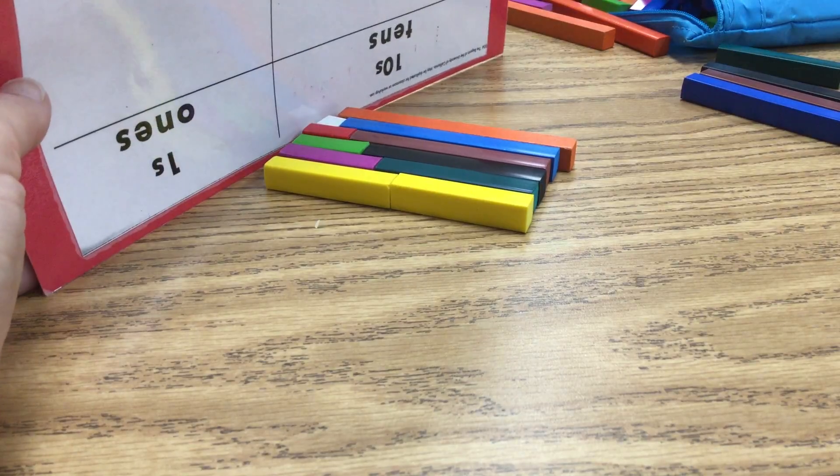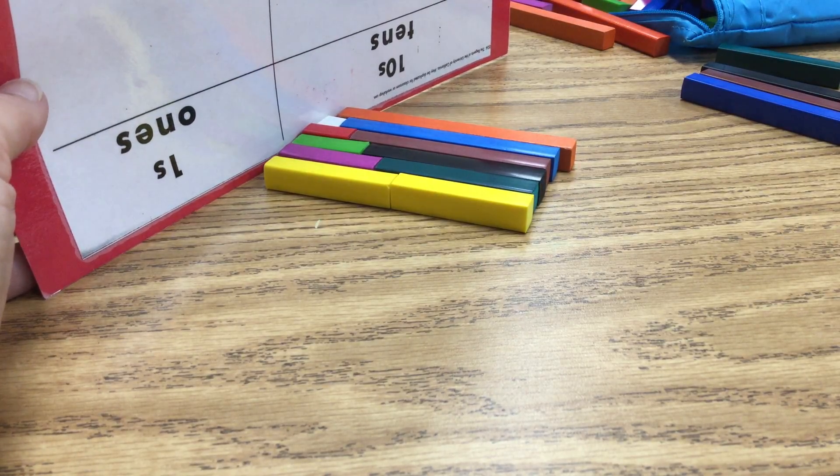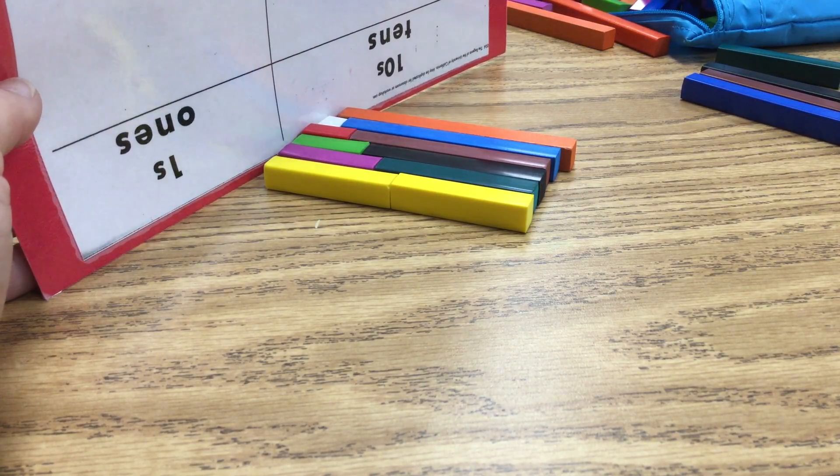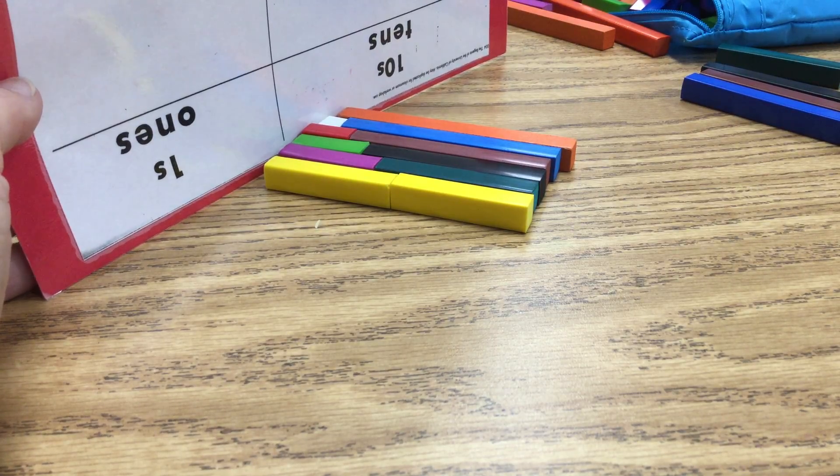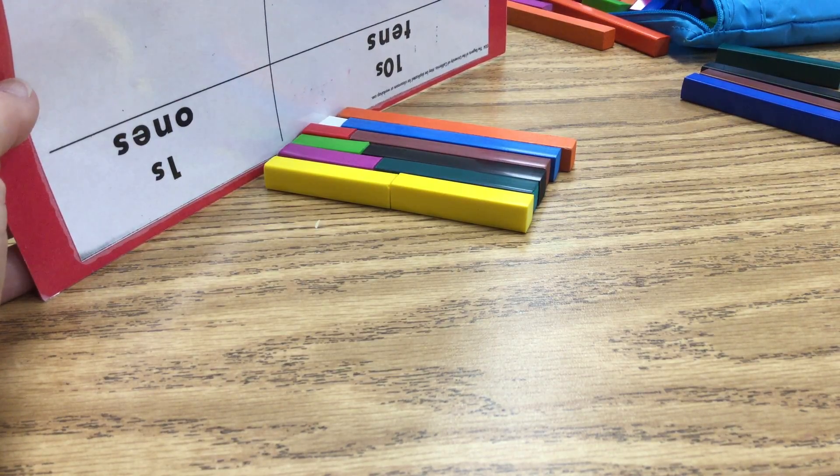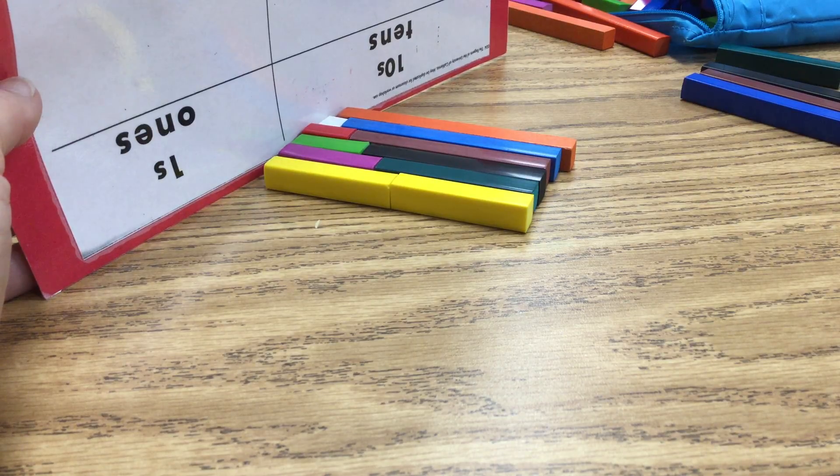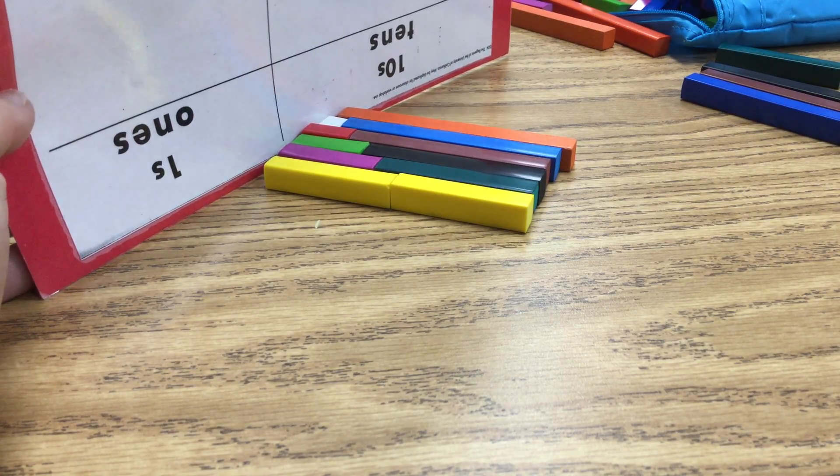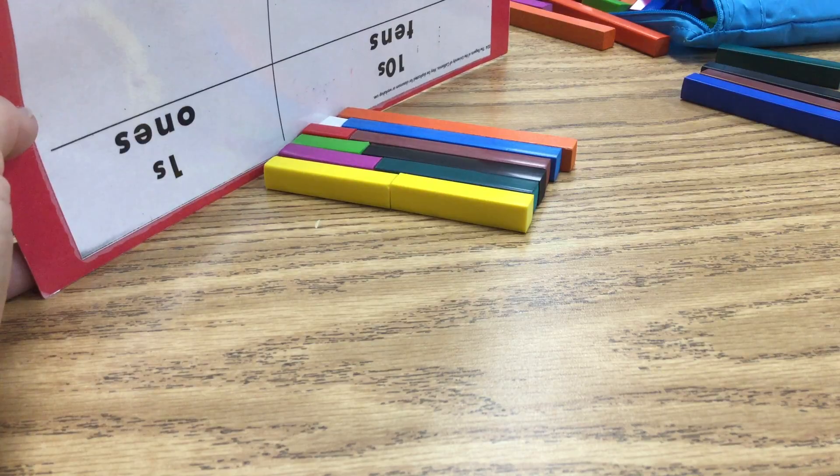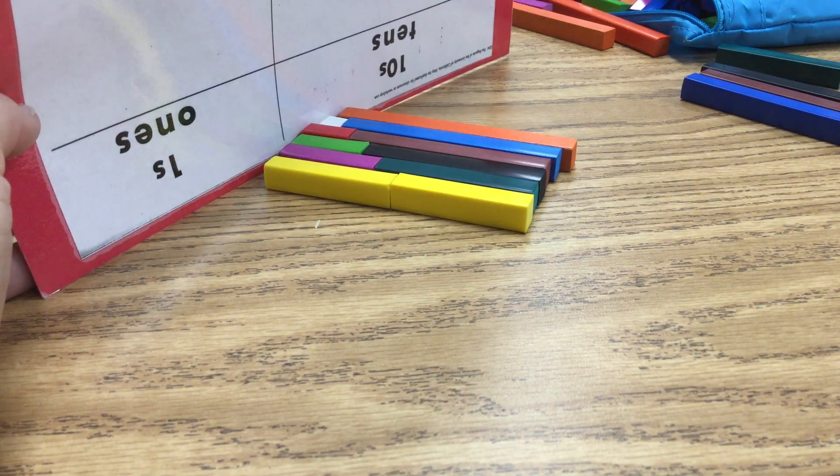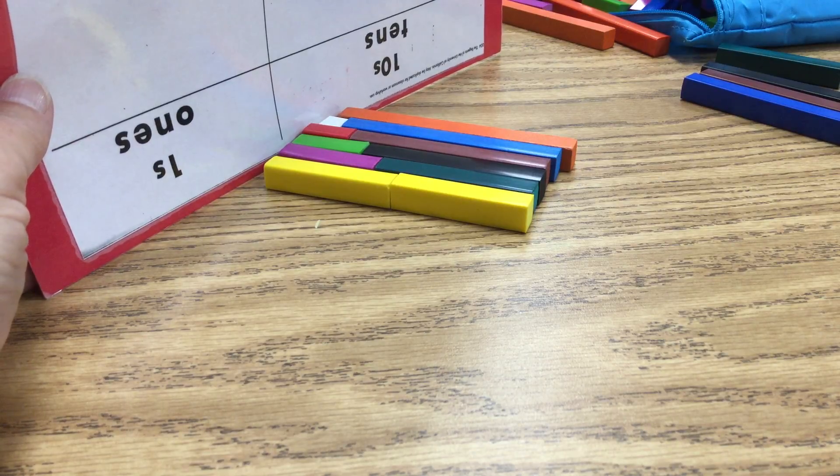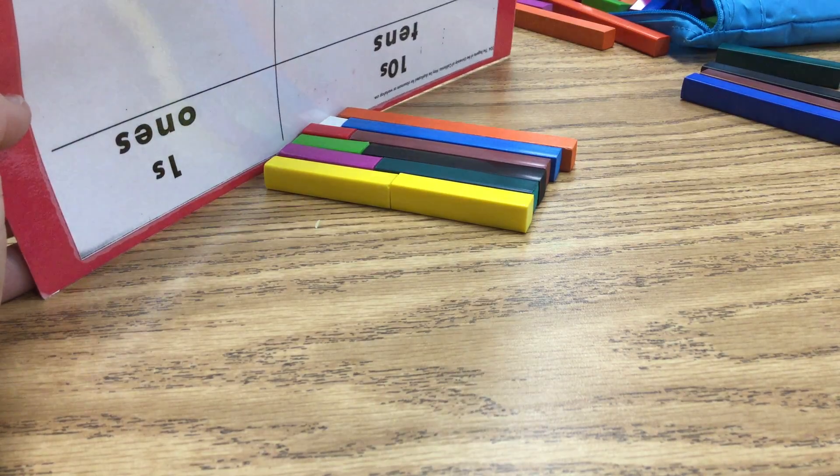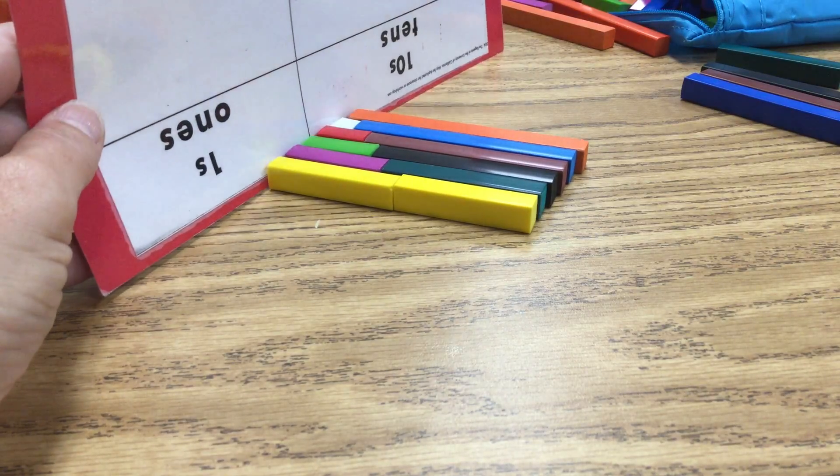And so, which one was orange? What number is orange? 10. And blue is 9. And brown is 8. And black. Yes. And how about dark green? 6. Very good. Yellow? 5. Purple? 4. Light green? 3. Red? 2. And white is 1, right? Very nice job.